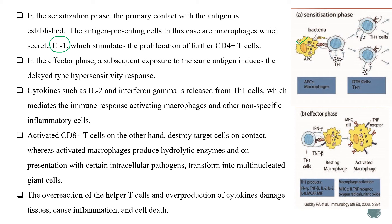The overreaction of helper T cells and overproduction of cytokines damage tissue, cause inflammation and cell death — that is type 4 hypersensitivity.